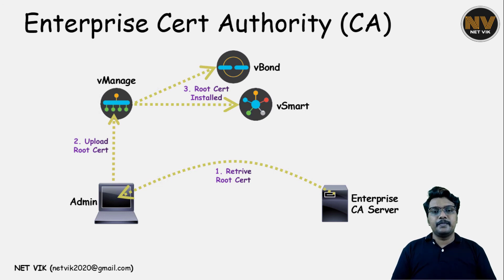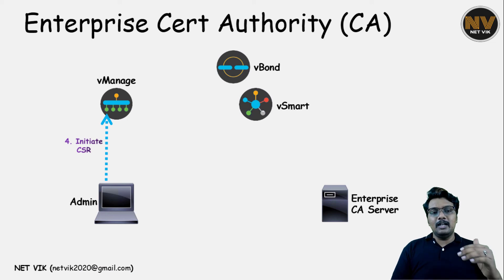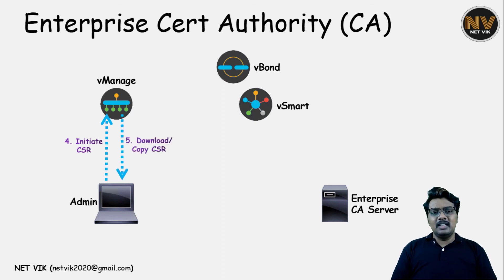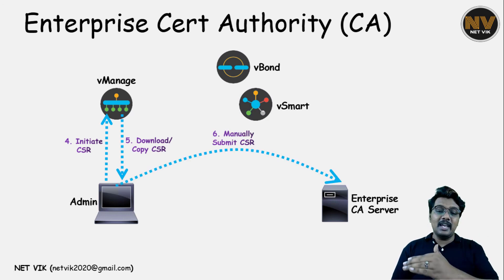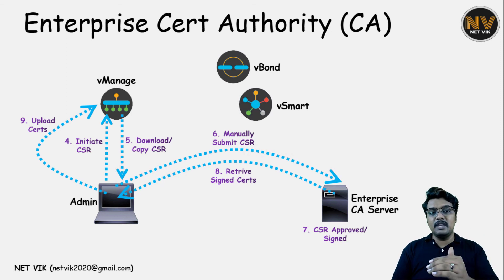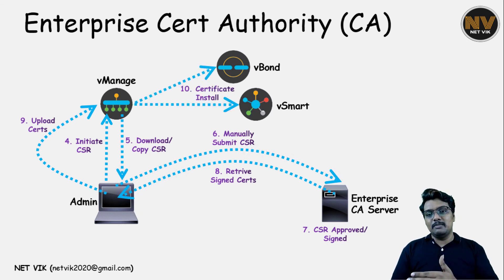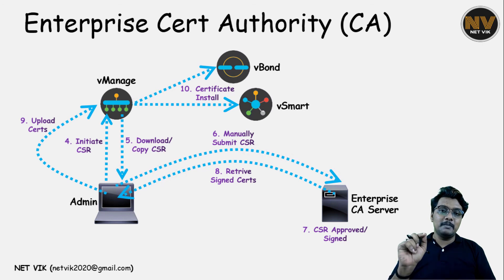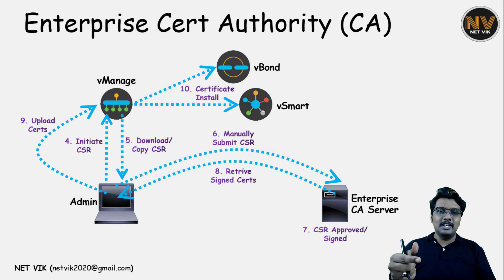The administrator logs into vManage and initiates the CSR — it can be for vManage, vBond, or vSmart. The administrator downloads a copy of the CSR and submits it to the enterprise CA, where it gets approved. The administrator then retrieves the signed certificate and uploads it to vManage. vManage keeps the signed certificate for itself if it is for vManage, or renders it to vBond and vSmart if it is for them. Please note this enterprise CA method is what we are going to use in our lab, and we will be bringing up our own enterprise CA using XCA software.